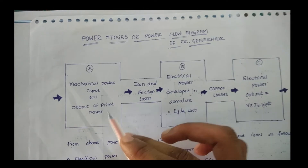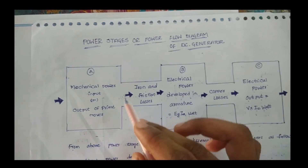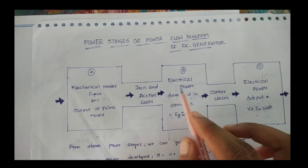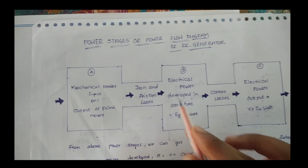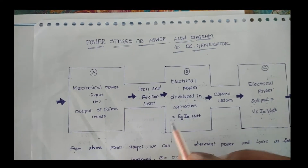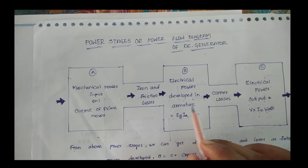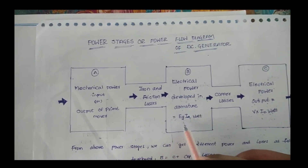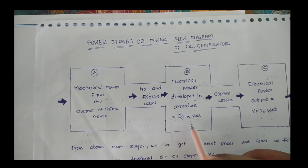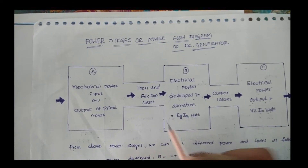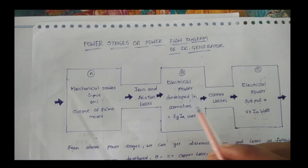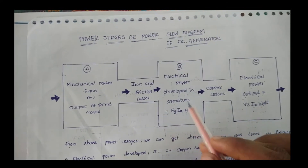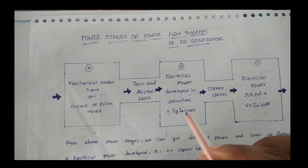The electrical power developed in the armature is equal to Eg multiplied by Ia, expressed in watts. This is the armature power developed in the generator.